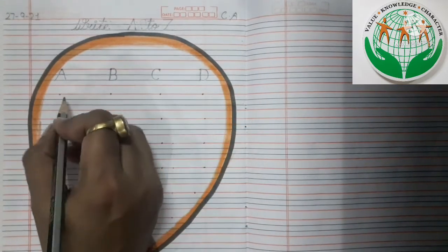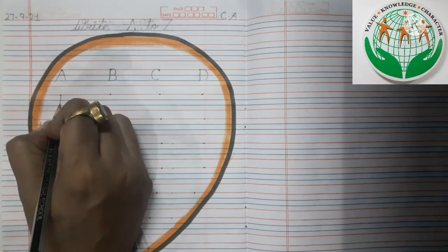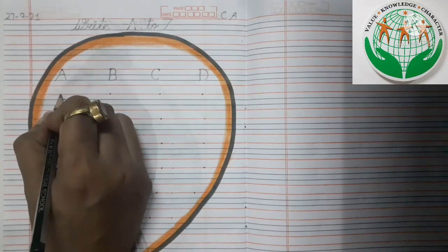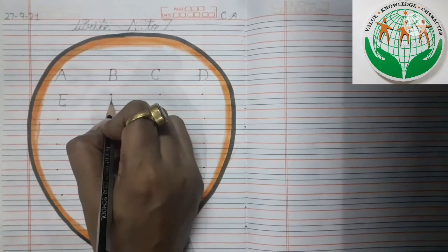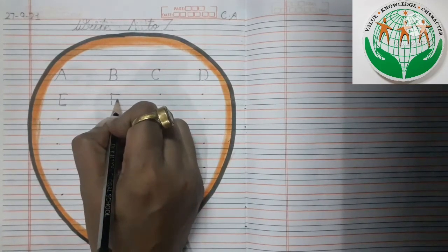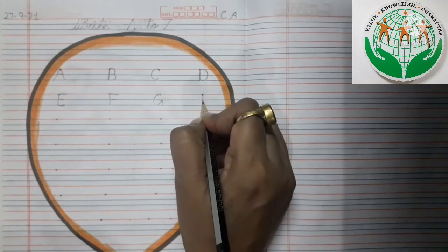Now come to the next line. And tell me what comes after letter D. Letter D ke baad kya aata hai? Yes. E, E, E, F, G, H.